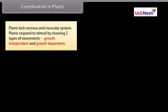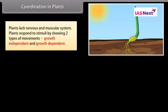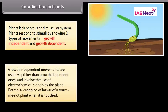Coordination in plants: Plants lack a nervous and muscular system. Plants respond to stimuli by showing two types of movements — growth independent and growth dependent. Growth independent movements are usually quicker than growth dependent ones and involve the use of electrochemical signals by the plant.